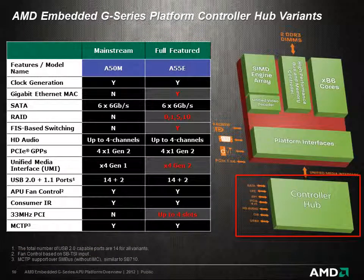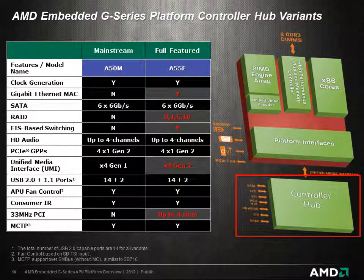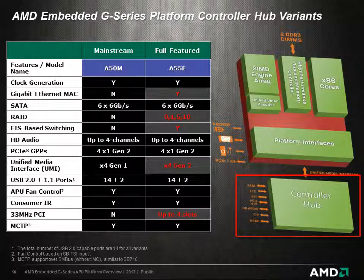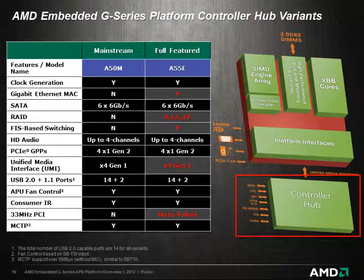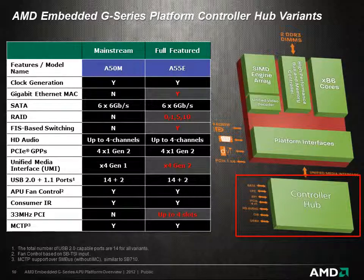The AMD G-Series platform also offers flexibility in the selection of the I/O controller. For applications that require only basic functionality, the A50M controller hub is available, with a full complement of I/O including integrated system clock generation, a 6 Gbps Serial ATA interface, HD audio, PCI Express interface for connecting to external I/O, USB ports, fan control, and consumer IR.